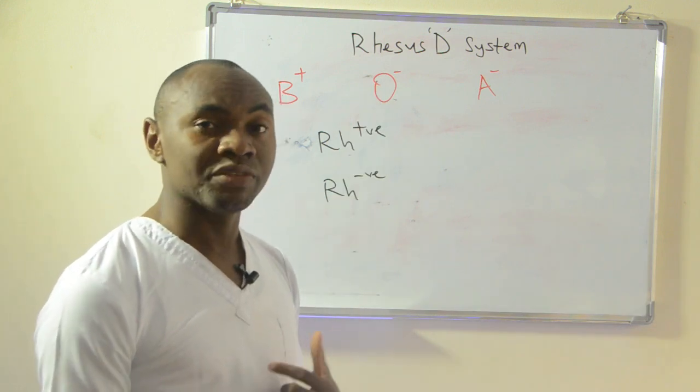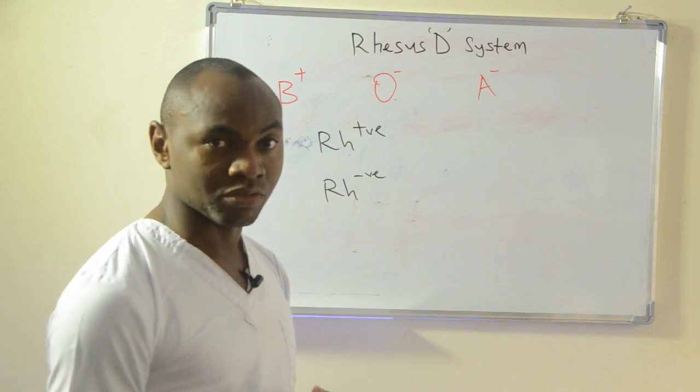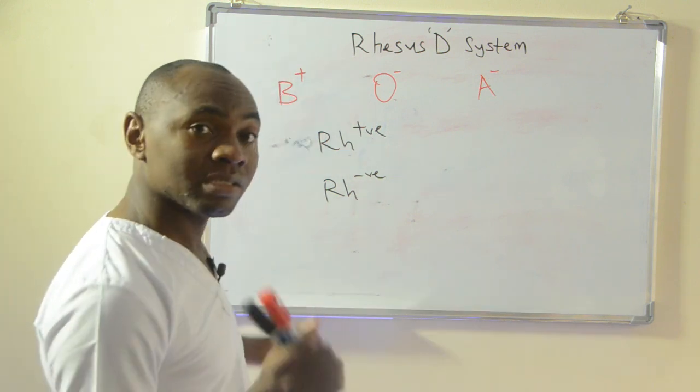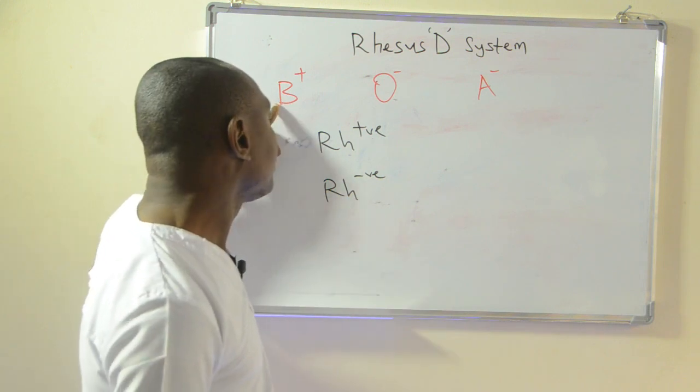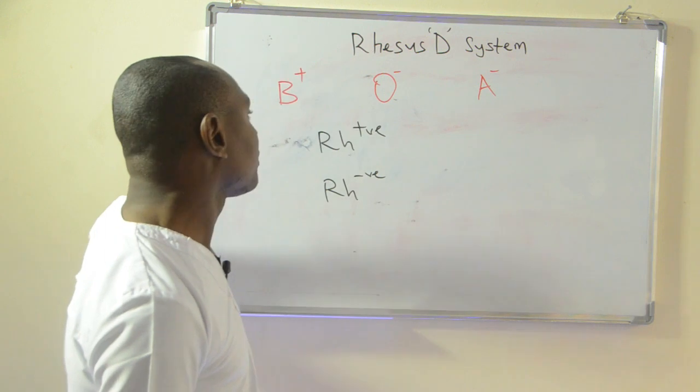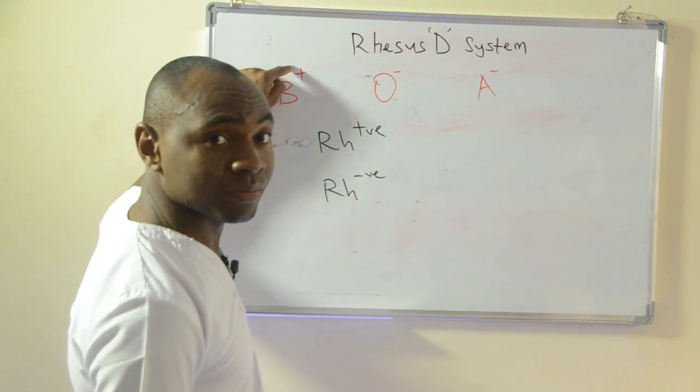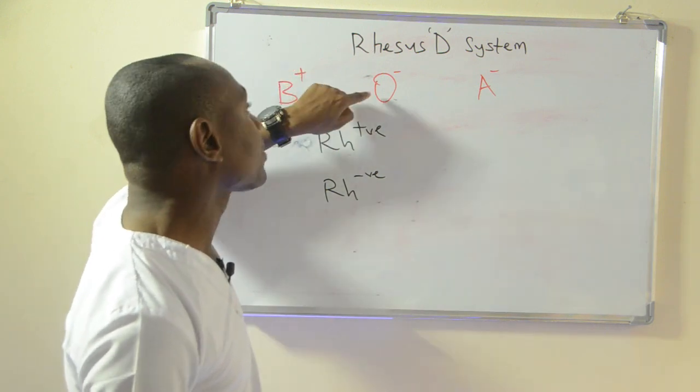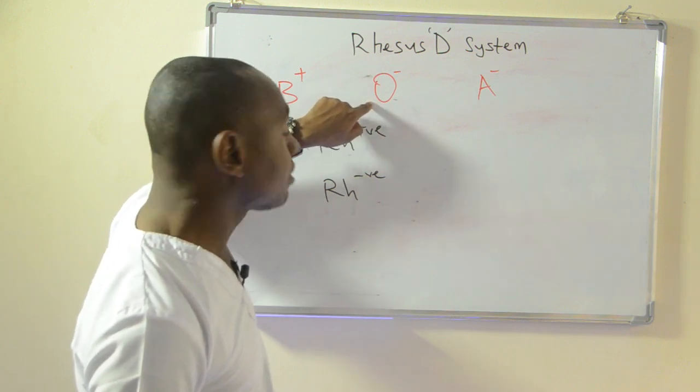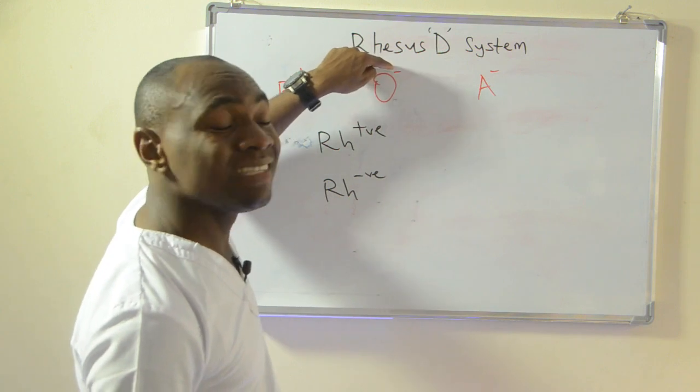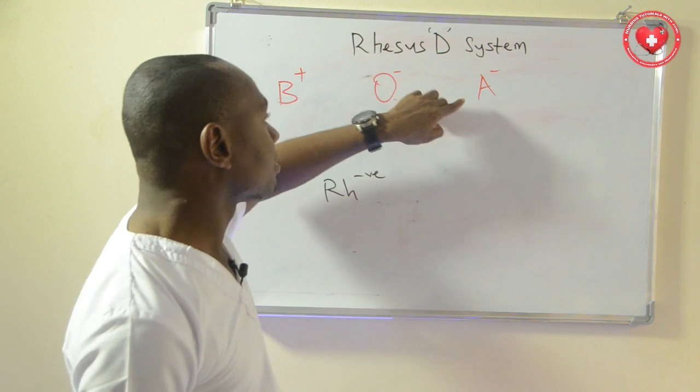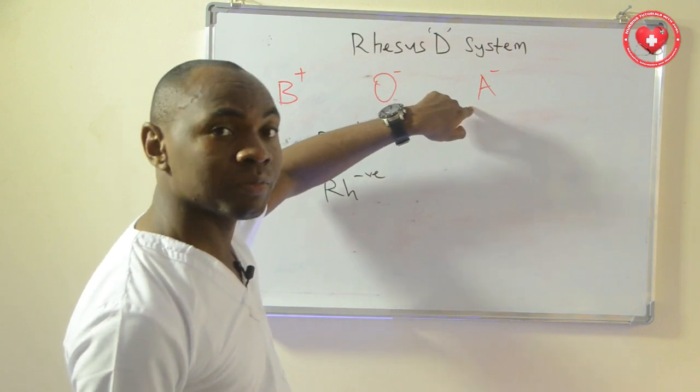An individual that is B positive, it tells us that that person is blood group B, at the same time the person has the presence of Rhesus factor. Someone who is O negative, this person is blood group O and is negative, meaning that there is an absence of Rhesus factor. Same goes for blood group A person who does not have Rhesus factor, person is termed A negative.